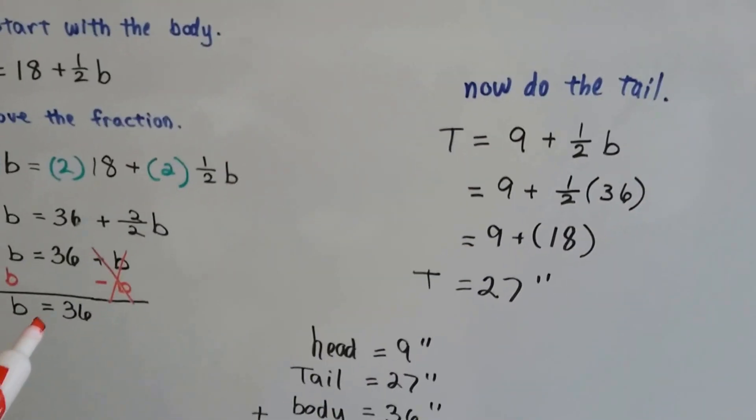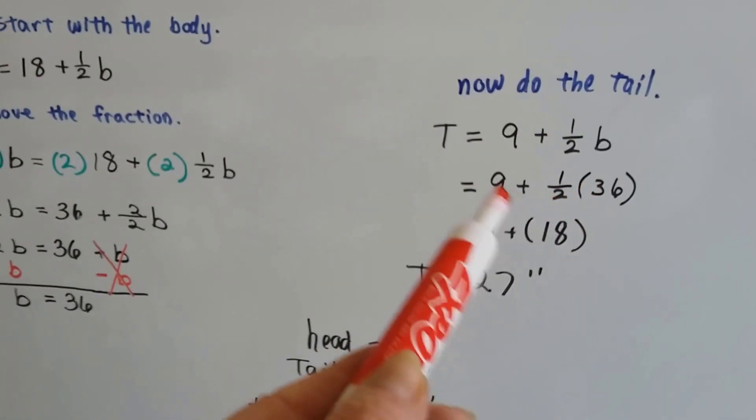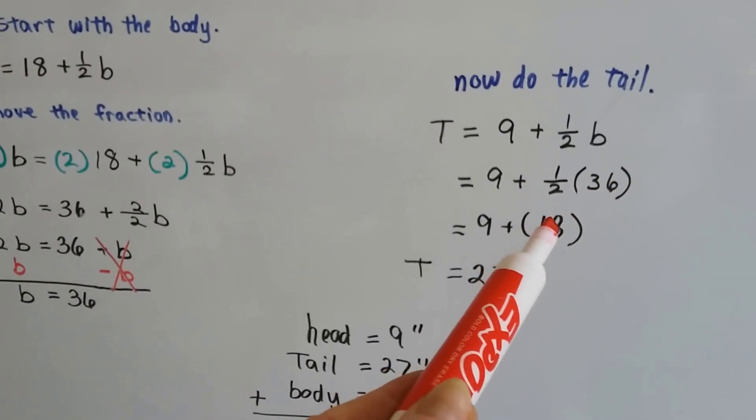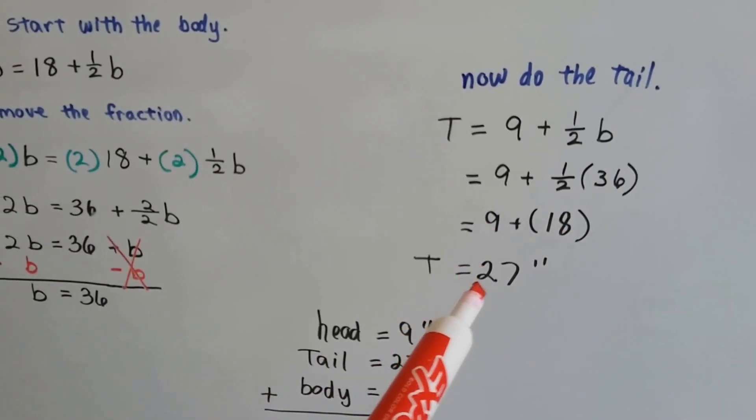So now we know the body is 36. We can plug that in. Nine plus half of 36 is an 18 plus nine, which is a 27.